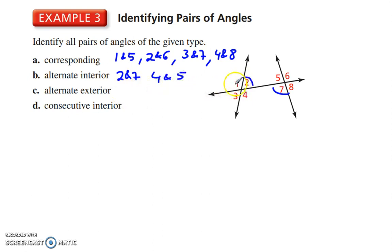Alternate exterior. 1 is on top, 8's below, so 1 and 8. And 3 and 6. 3 and 6.